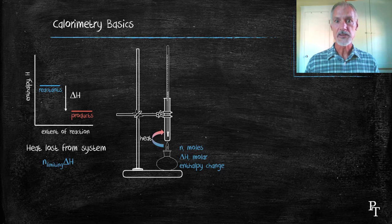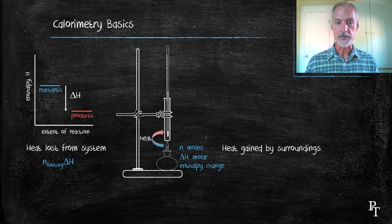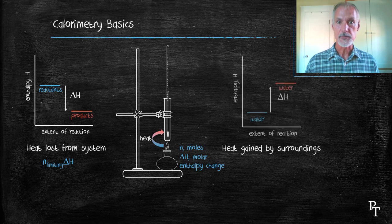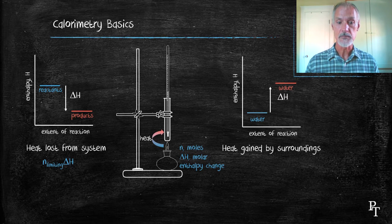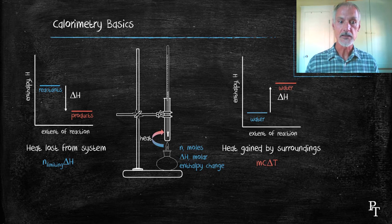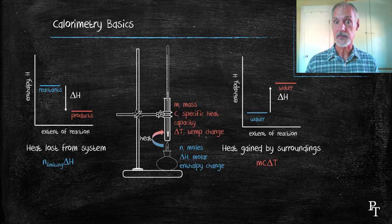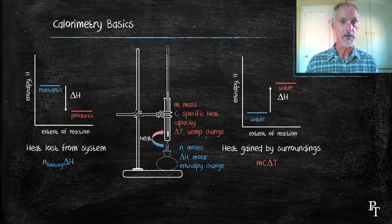The heat that's lost is going to equal the heat that's gained by my water. The water's enthalpy as a result will increase, and we can measure that increase in enthalpy by measuring these variables: the mass of the water, the specific heat capacity of the water, and the temperature change of water.